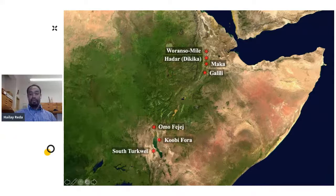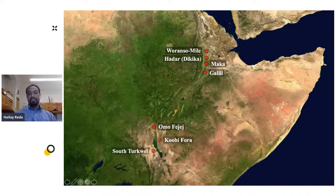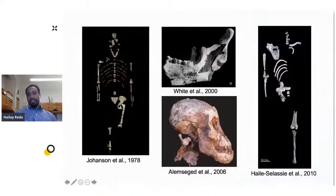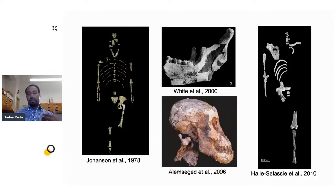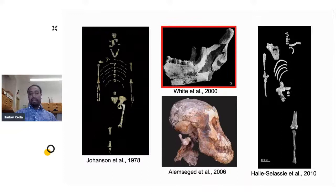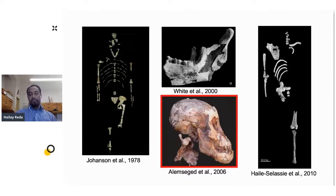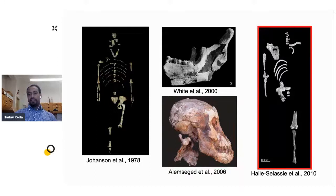Looking at the contribution of the sites, we have different important early human remains discovered from Hadar — for instance, Lucy. We also have human remains discovered from Middle Awash, and another important baby early human remains discovered from Dikika named Selam. We also have Kadanuumuu, another important early human remains discovered from Woranso-Mille at about 3.57 million years ago. All these individuals belong to one species, suggesting an assumption that between 3.6 to 3 million years ago, there was only a single species of early humans in the Afar region.